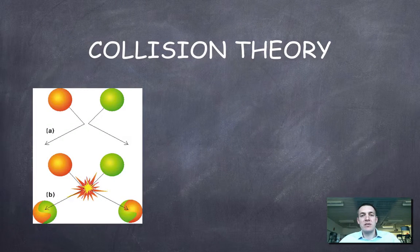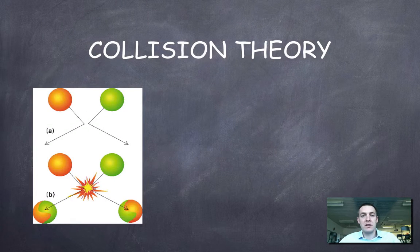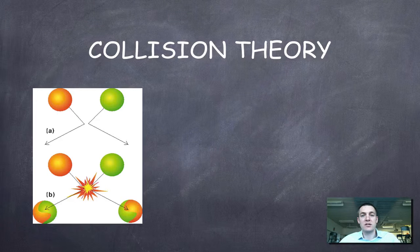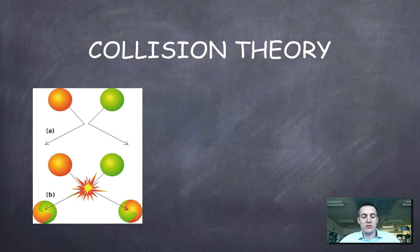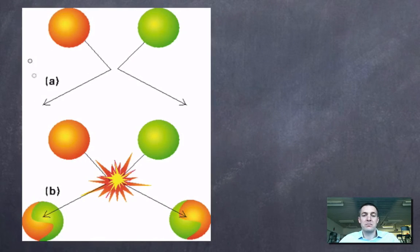But as we can see here in this picture, some collisions lead to reactions and some don't. So in the top part of this diagram, in part A, we can see two particles, an orange and a green one, colliding together but then just bouncing away from each other. Whereas these two particles seem to be reacting together in this flash of reaction excitement and turning into these products.